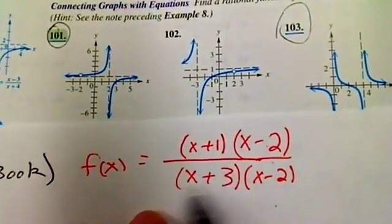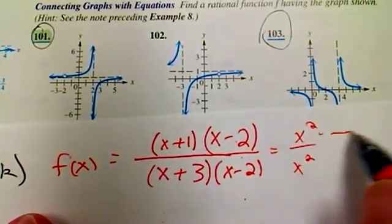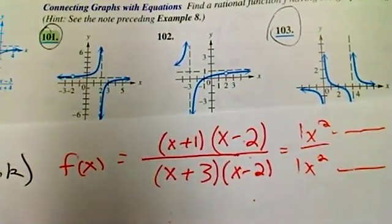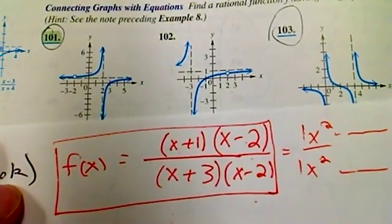And notice that if we were to multiply all this out, I would get an x squared up here, x squared, and then whatever, and that would have a coefficient of 1. So this function right here should work just fine for me, okay?